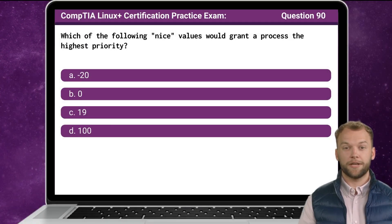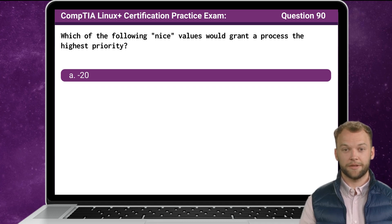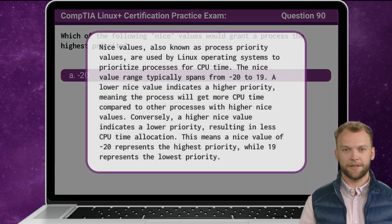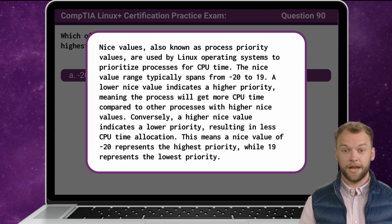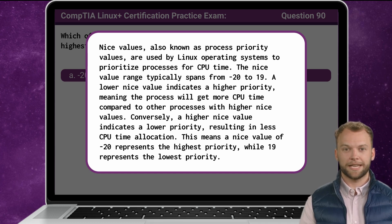Question 90. Which of the following nice values would grant a process the highest priority? Nice values, also known as process priority values, are used by Linux operating systems to prioritize processes for CPU time. The nice value range typically spans from negative 20 to 19. A lower nice value indicates a higher priority, meaning the process will get more CPU time compared to other processes with higher nice values. Conversely, a higher nice value indicates a lower priority, resulting in less CPU time allocation. This means a nice value of negative 20 represents the highest priority, while 19 represents the lowest priority.